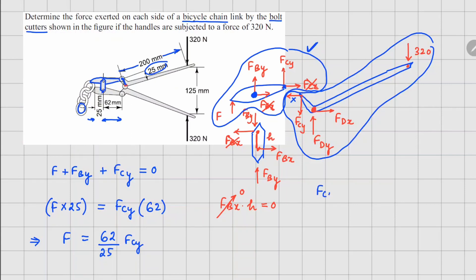When I write this moment balance equation we are going to get FCy times this distance, which we do not know at this point so I am going to call this x, which is the distance between these two points here.